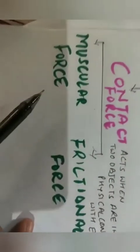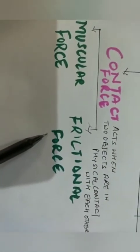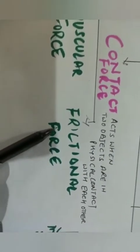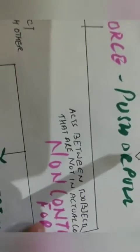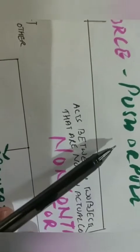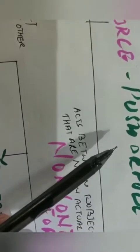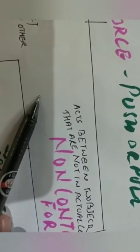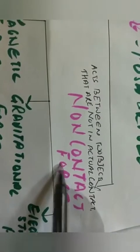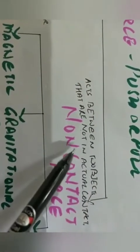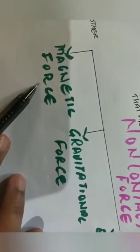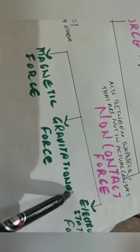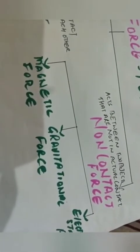Muscular force and frictional force are examples of contact forces. However, a magnet attracts an iron nail and you cannot see the force applied directly. When an apple falls to the ground, you cannot see the gravitational force. Such forces that act between two objects not in direct contact are called non-contact forces. Examples are magnetic force, gravitational force, and electrostatic force.